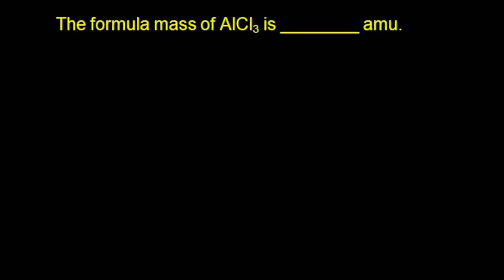The formula mass of aluminium chloride is dash amu. Aluminium chloride, that is AlCl3. So what should we do first?